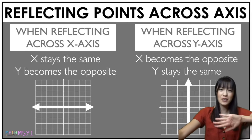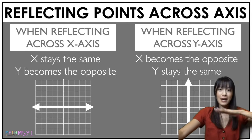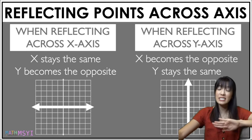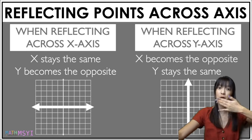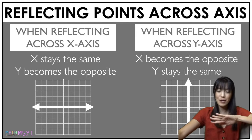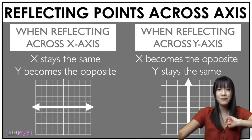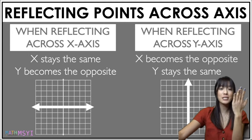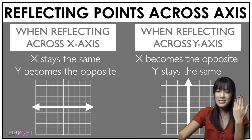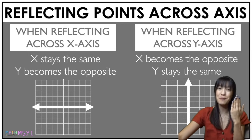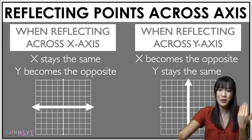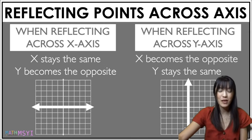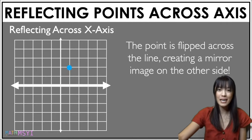When you're reflecting across your x-axis, your x-coordinate doesn't change but your y-coordinate becomes the opposite number. When you reflect across your y-axis, your x-coordinate becomes the opposite number and your y-coordinate stays the same. So let's look at this example with our x-axis reflection.